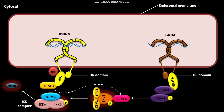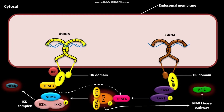After separating from the IKK complex, TAK1 activates MAP kinase pathways. The activation of MAP kinase pathways results in the formation of an active AP1 dimer. AP1 is a transcription factor. TRIF also activates MAP kinase pathways, which leads to the formation of an active AP1 dimer.